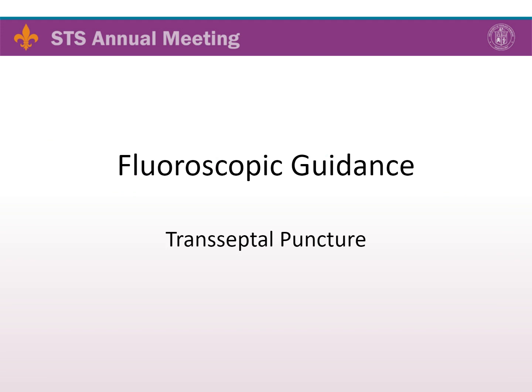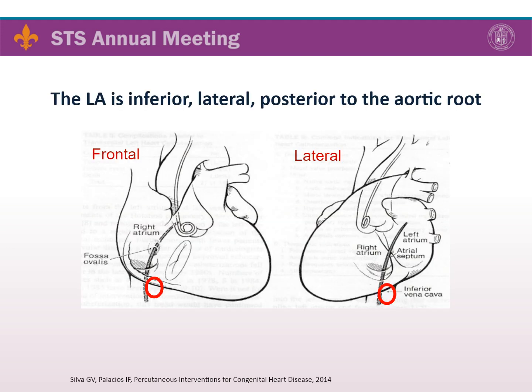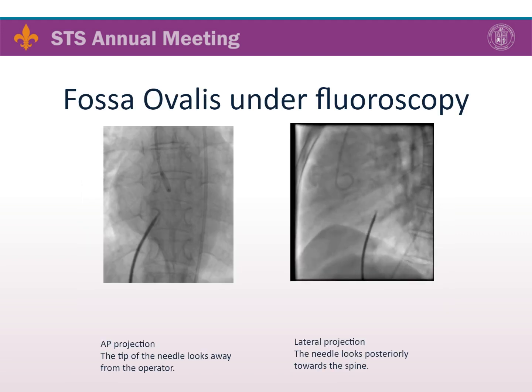Imaging is key to performance of transseptal puncture, and we will start with fluoroscopic guidance. Anatomically, the left atrium is inferior, lateral, and posterior to the aortic root. Classic angiographic landmarks are based on two lines: the first is the midline, which is a vertical line through the middle of the septum; the second is the M line, which is a horizontal line through the middle of the mitral valve.